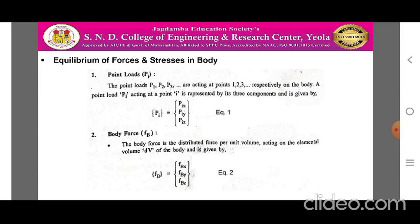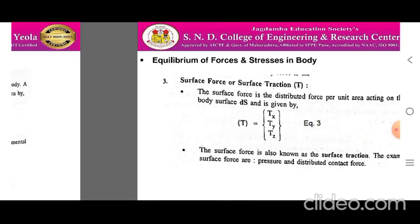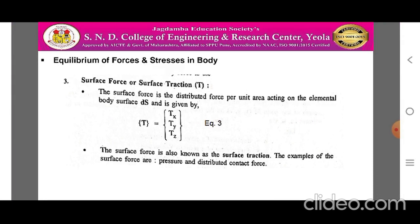Similarly, body force is the distributed force per unit volume acting on an elemental volume dV of the body, and is given by F_B = [F_Bx, F_By, F_Bz] — equation 2. The surface force or surface traction force is the distributed force per unit area acting on an elemental body surface dS, given by T = [Tx, Ty, Tz] — equation 3. Examples of surface force are pressure and distributed contact force.